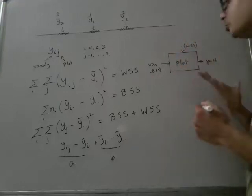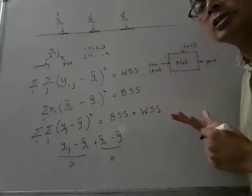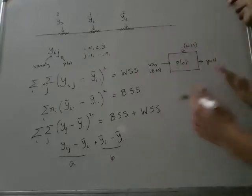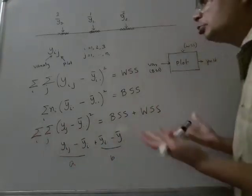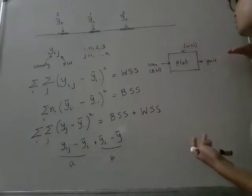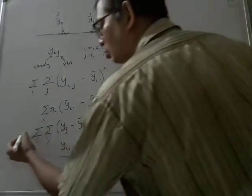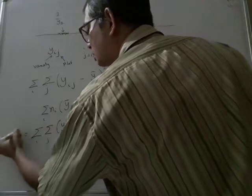And this is something which appeals very much to our statisticians because it captures algebraically our intuitive notion that any variation that you see in the yield, and they used to call it TSS for total sum of squares.